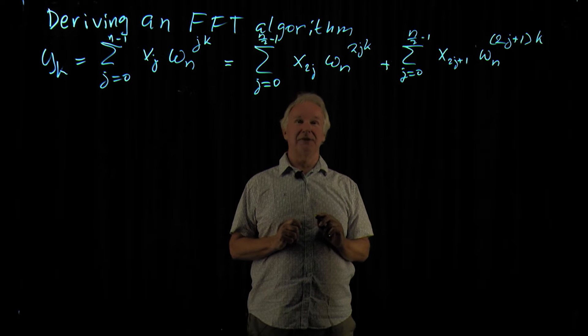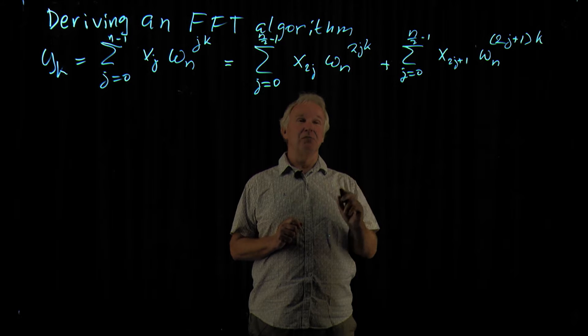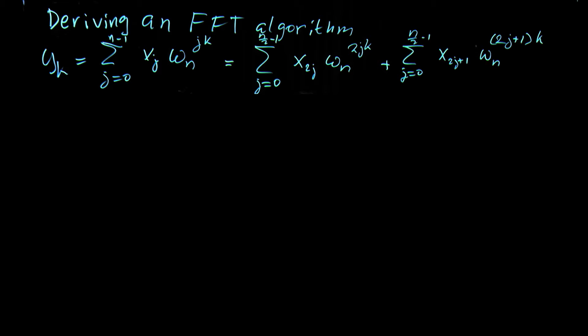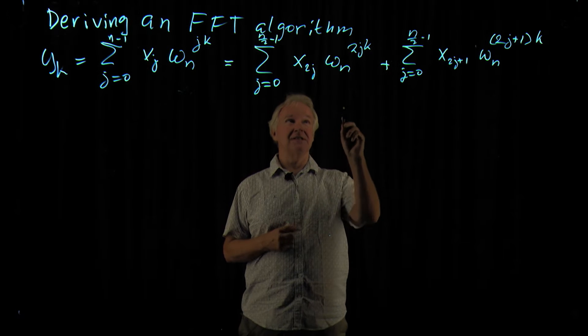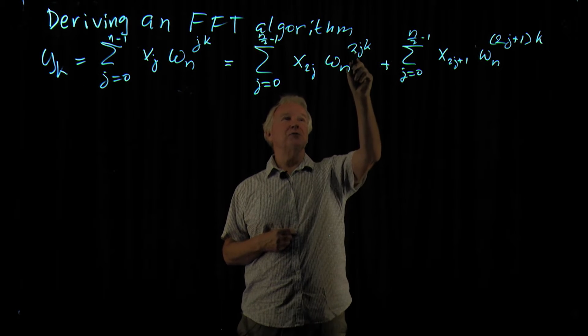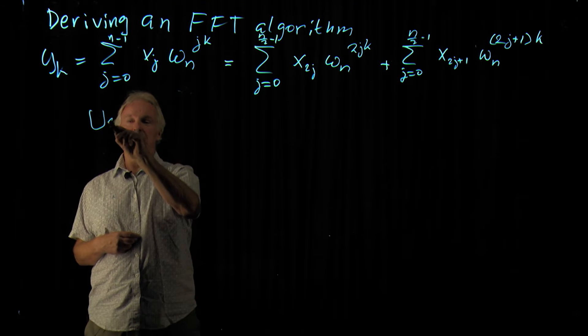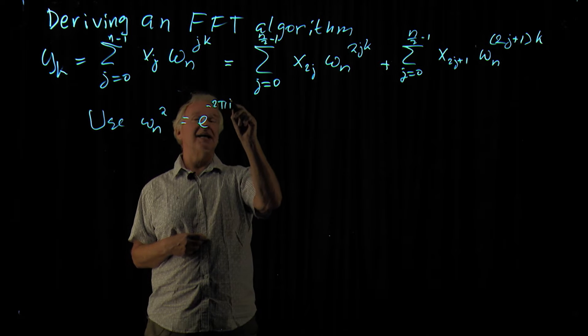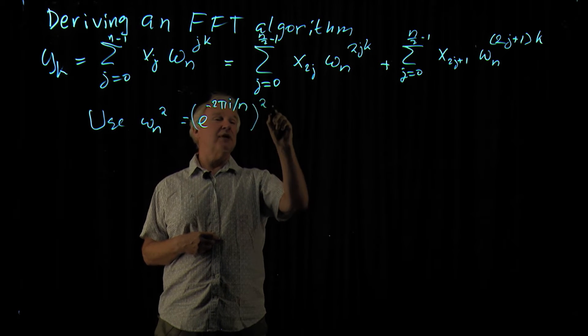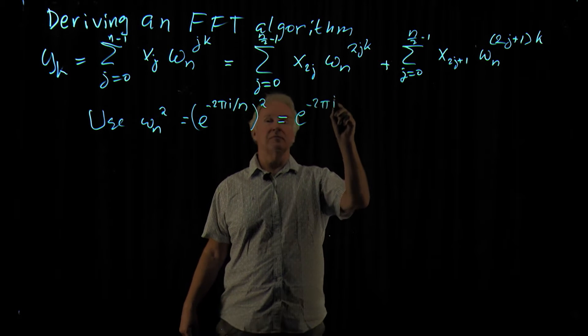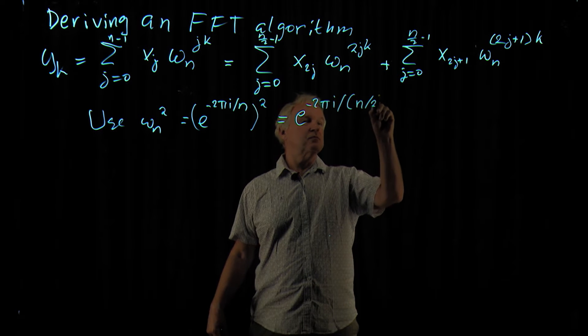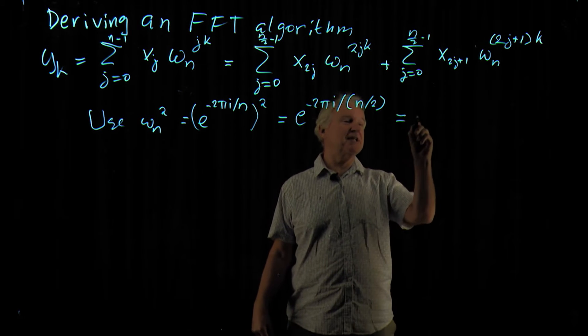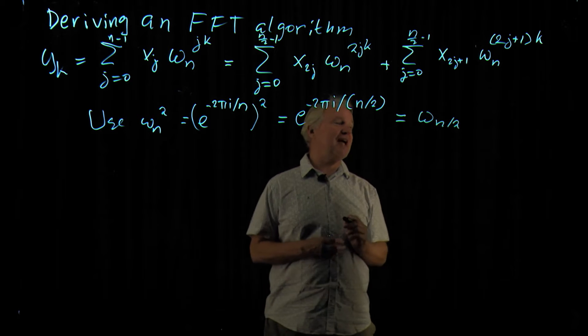But how can we make this even more look like an FFT of size n over 2? When you think about it, this factor of 2 we want to disappear. So if we use omega_n squared, it's omega_n to the power minus 2πi divided by n squared, and this factor of 2 moves, so we can write this as omega of n/2.